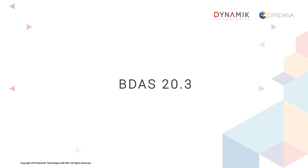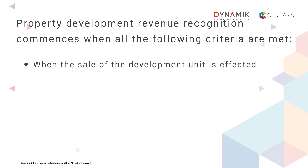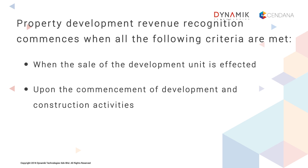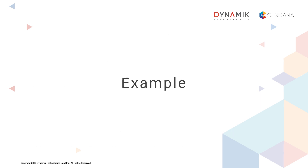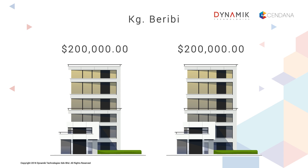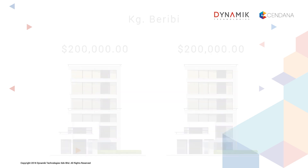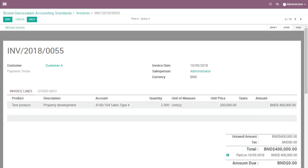Next, under BDAS20.3 is to record property development revenue. Property development revenue recognition applies when all the following criteria are met: when the sale of the development unit is affected, upon the commencement of development and construction activities, and when the financial outcome of the development activities can be reliably estimated. For example, Power Sandiran Berhad is selling two completed residential apartments at Kampong Beribi at $200,000 each. This is a customer invoice transaction where the accounting entries will be credited to property development for the total amount of $400,000. This is how the entry is drafted in Accounting Plus under a customer invoice transaction.